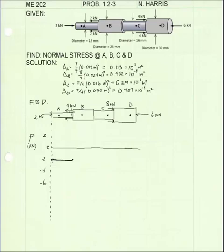At this point, we get an addition of 4 kN pointing in the opposite direction. That's going to cause a 4 kN jump in our graph, so that from this point going over to the right, our internal force is going to be 2 kN in tension, or positive.